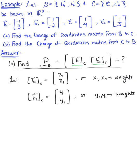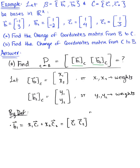By the definition of coordinate vectors, vector B₁ can be written as the linear combination x₁ times vector C₁ plus x₂ times vector C₂. We can convert this vector equation to matrix equation form: the matrix with column vectors C₁ and C₂ multiplied by the column vector of weights (x₁, x₂). This is the change of coordinates matrix relative to basis C multiplied by the coordinates of B₁ relative to C.